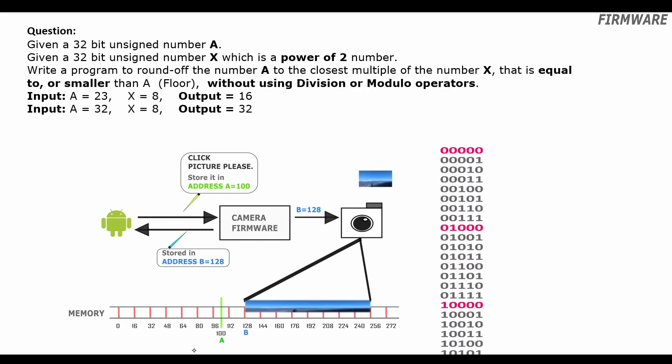Hey guys, in this episode we will learn how to implement byte alignment using bit manipulations. We had learned the concept of byte alignment in our previous episode — we had seen how hardware expects the memory addresses it receives to be a multiple of a number x, where x is a power-of-two number. We had taken the example case of x equal to 64 and aligned address a to address b. Please have a look at our previous episode; the link is in the description below and at the top right corner of your screen.